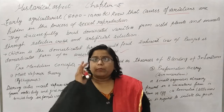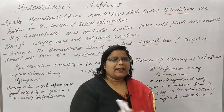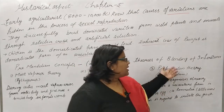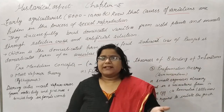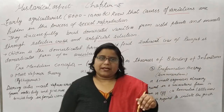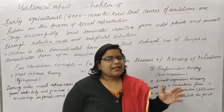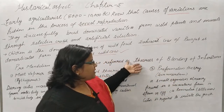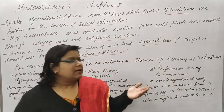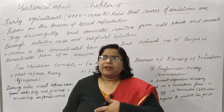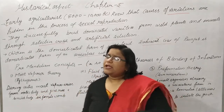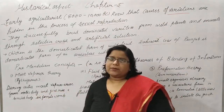But the Theory of Blending of Inheritance could not explain variations, so it is not justified — that is why this theory is considered wrong. There were also other theories, such as the pre-formation theory, fluid theory, and moist vapour theory.